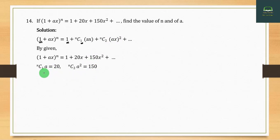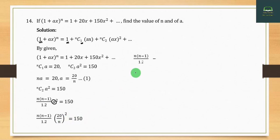And nC₂·a² = 150, which means [n(n-1)/2]·a² = 150. From the first equation, a = 20/n. Substituting: [n(n-1)/2]·(20/n)² = 150.